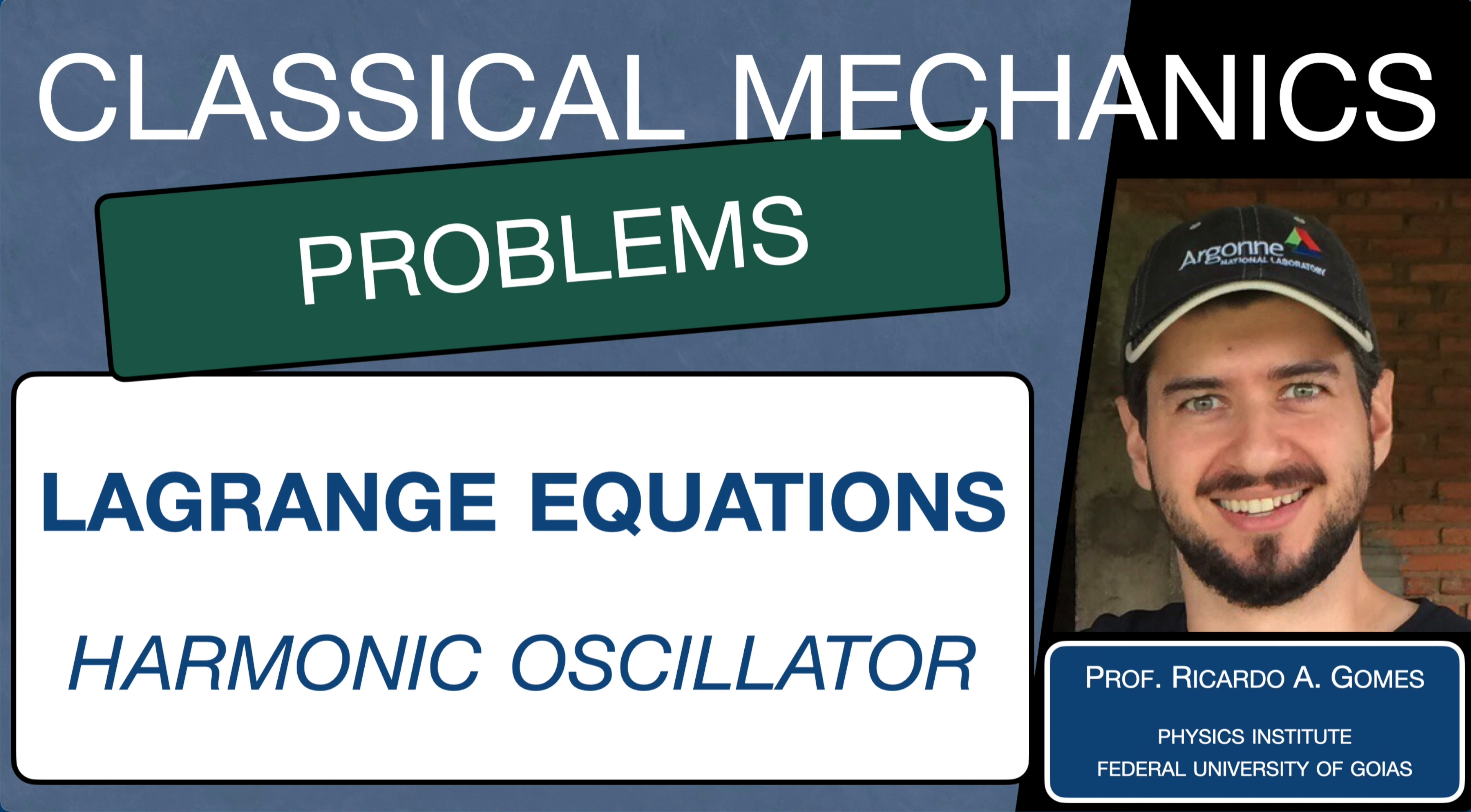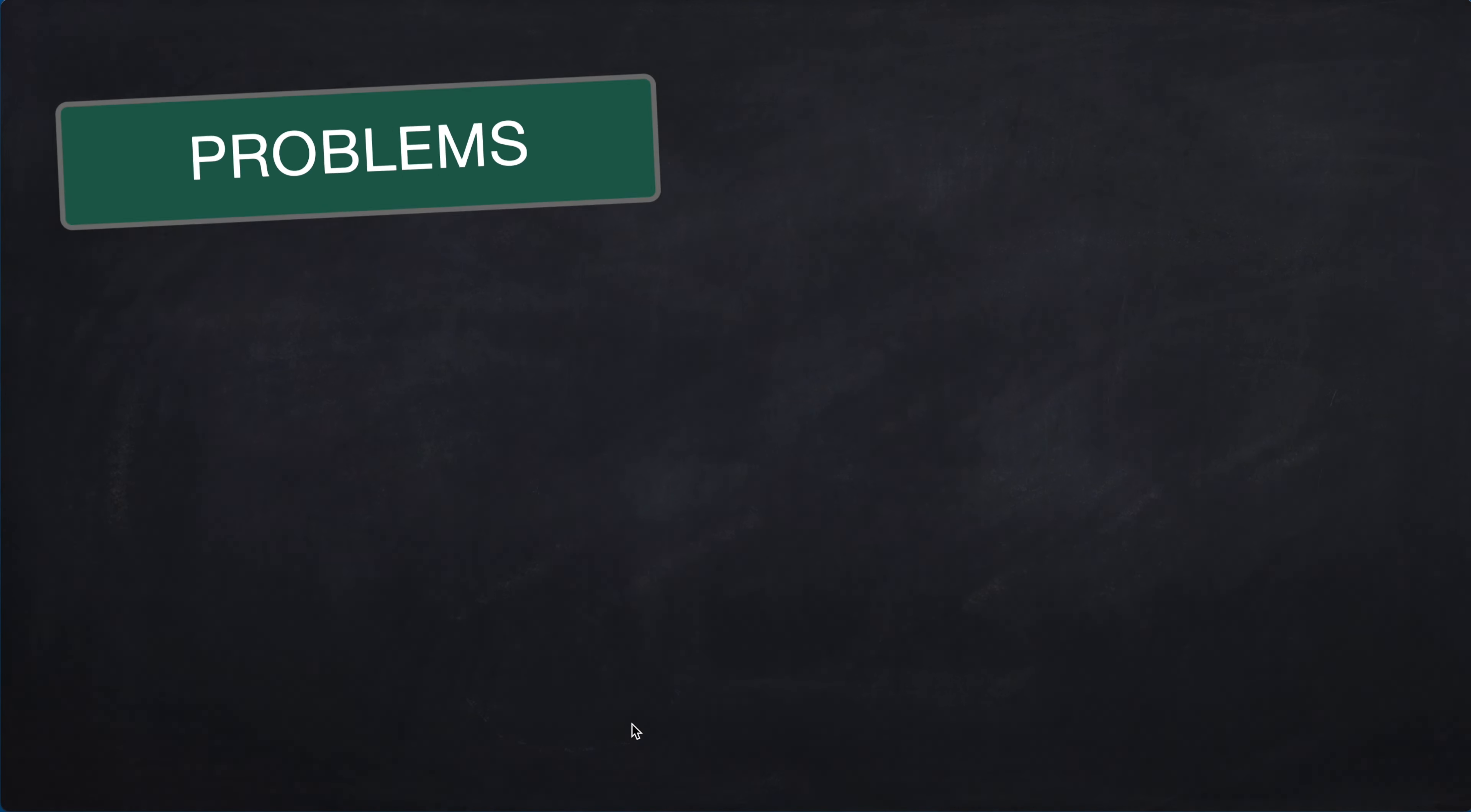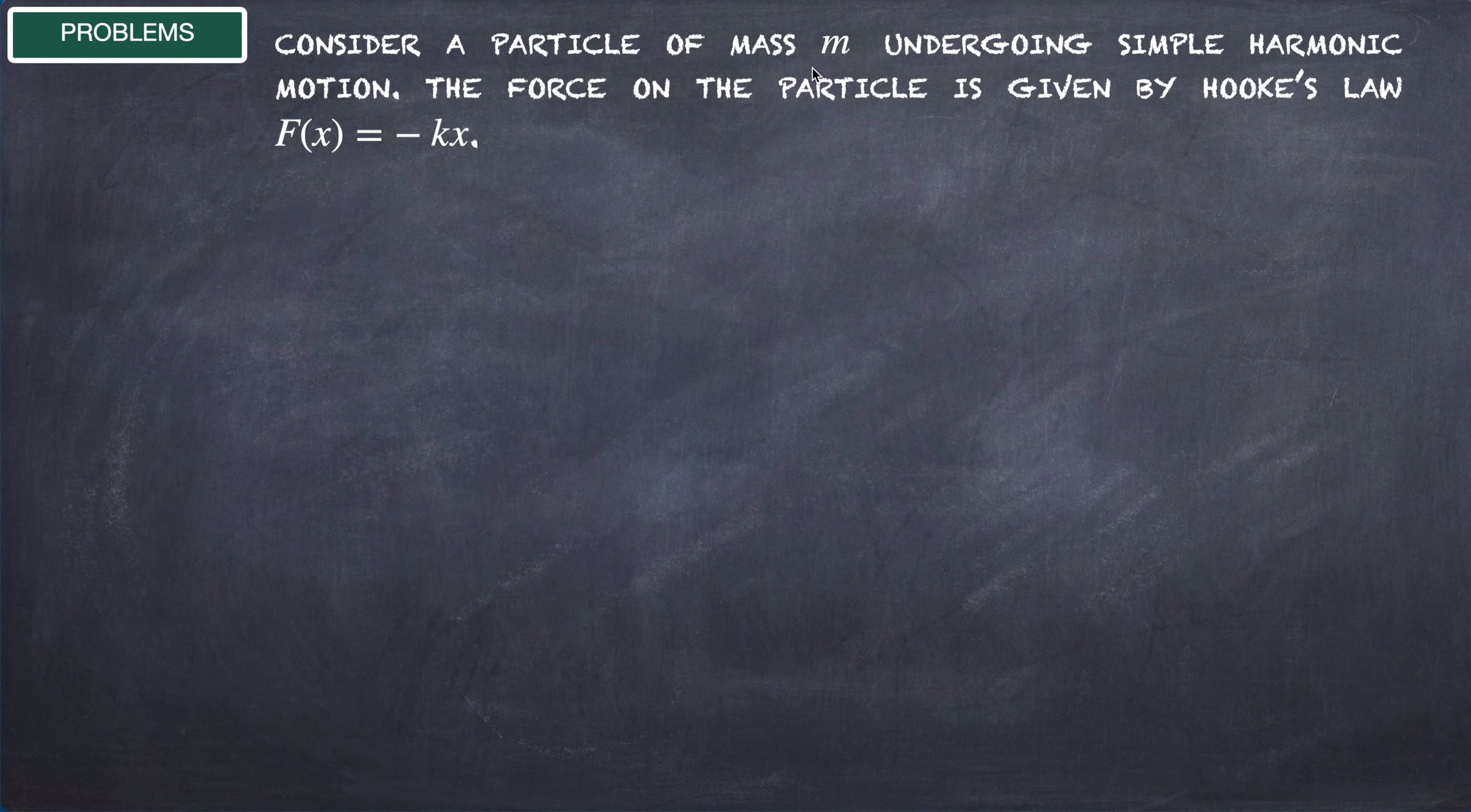Hello everyone, I'm Professor Ricardo. In this video we are going to use the Euler-Lagrange equation to find the equation of motion of a particle moving under a force given by Hooke's law. Consider a particle of mass m undergoing simple harmonic motion. The force on the particle is given by Hooke's law: F(x) = -kx.